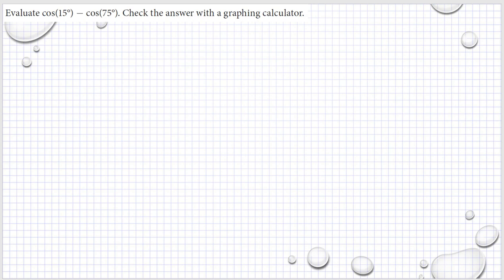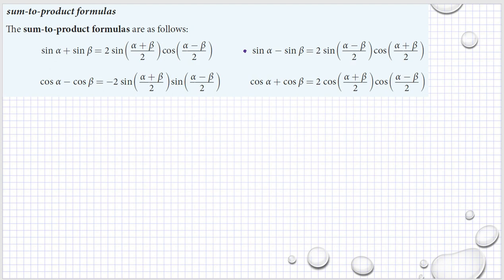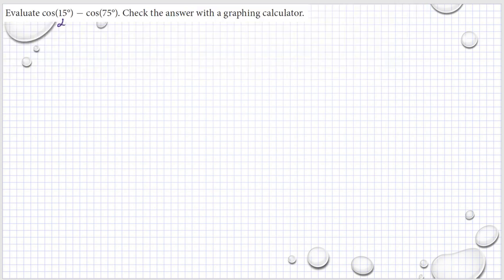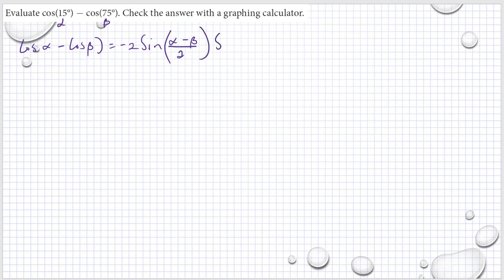Evaluate cosine(15°) − cosine(75°). This is our alpha and this is our beta. The formula is: cosine(α) − cosine(β) = −2·sine[(α − β)/2]·sine[(α + β)/2]. I wrote it wrong — it should be a plus and this should be a minus. It's not that easy to remember everything.